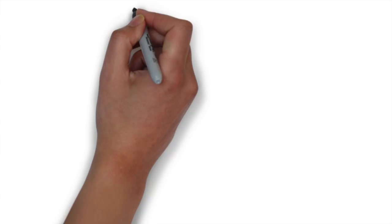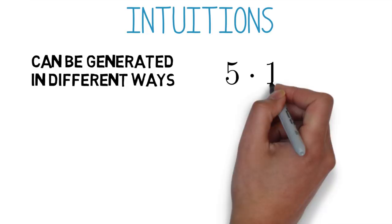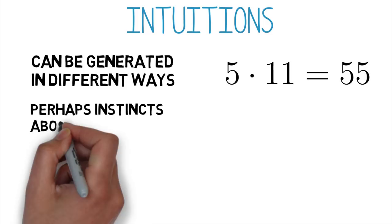Some think that intuitions in different areas are generated in different ways. Maybe some things become intuitive after we have rehearsed them. The multiplication example could be in this category. But in some areas, we seem to have intuitions about novel problems. Perhaps we're recognizing common patterns. And perhaps our instincts about morality work differently from our instincts about causation or knowledge.